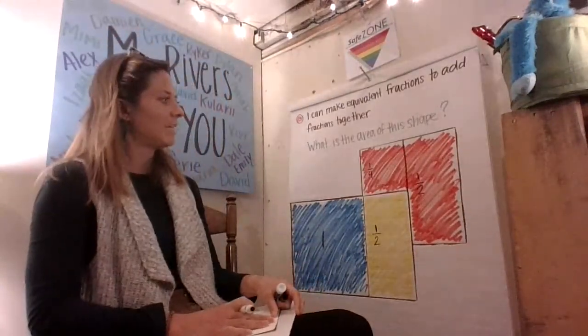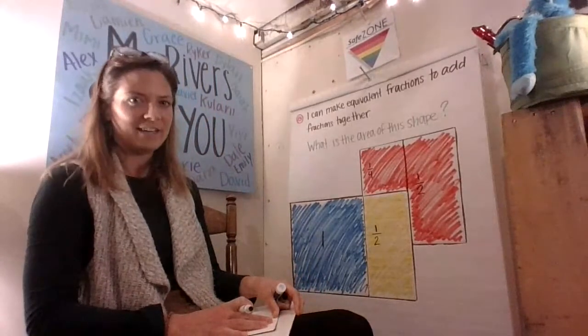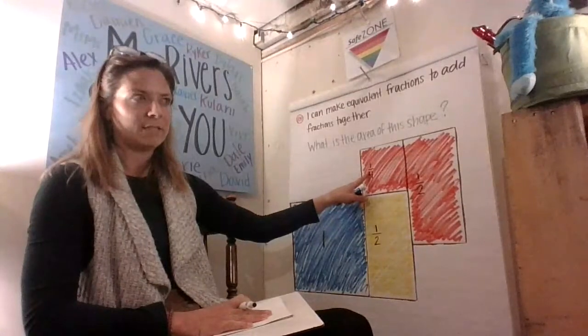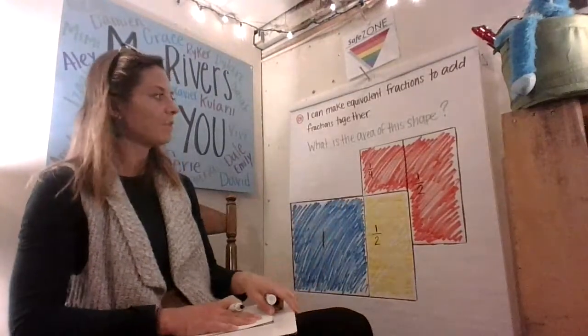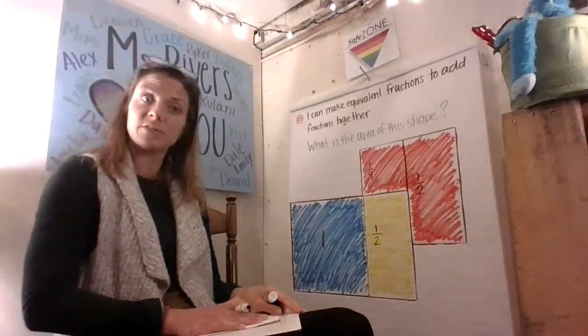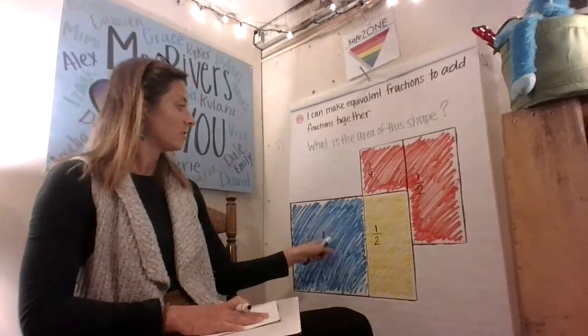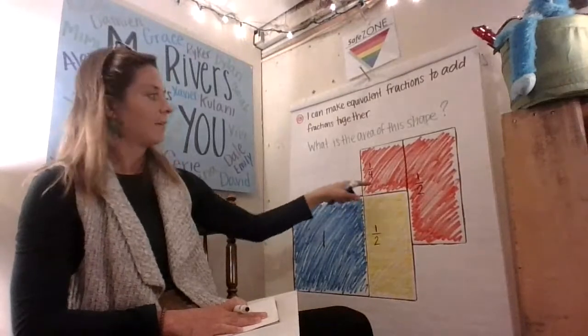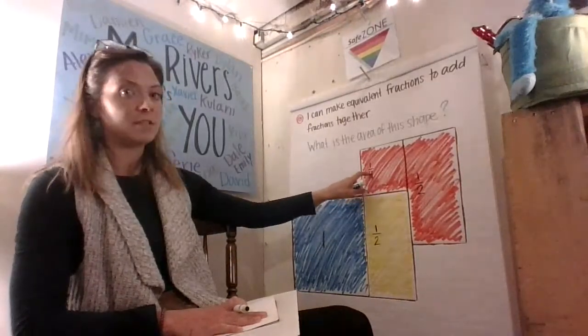But I can't add one plus one half plus one half plus one fourth. That's too messy for me. So I need to change them all so that they match the smallest unit, the one with the largest denominator.